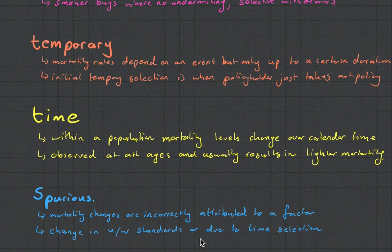Okay, and this leads us to our last one, which is called spurious selection. And this is when we incorrectly attribute a mortality change to a factor. And the classic example is, let's say we've got a life insurance company and it's been operating for 50 years. And a new CEO comes in and he changes the underwriting standards. And then they do a little test a few years later and they see, wow, look how the mortality of our clients has reduced. This must be because of our underwriting standards. However, it was more likely that the decrease in mortality happened simply because of time selection.